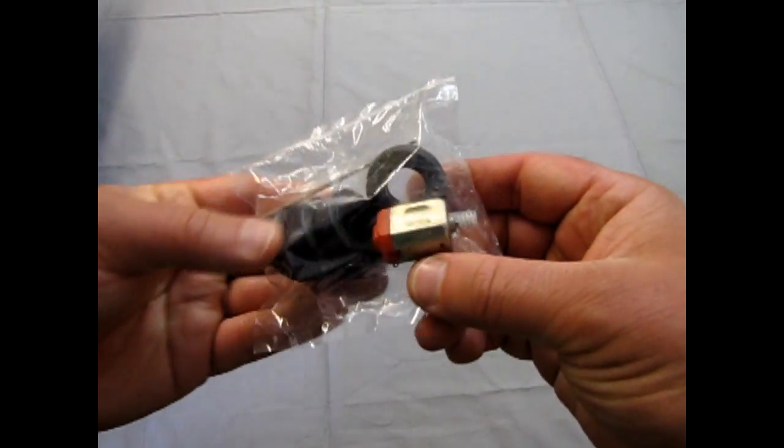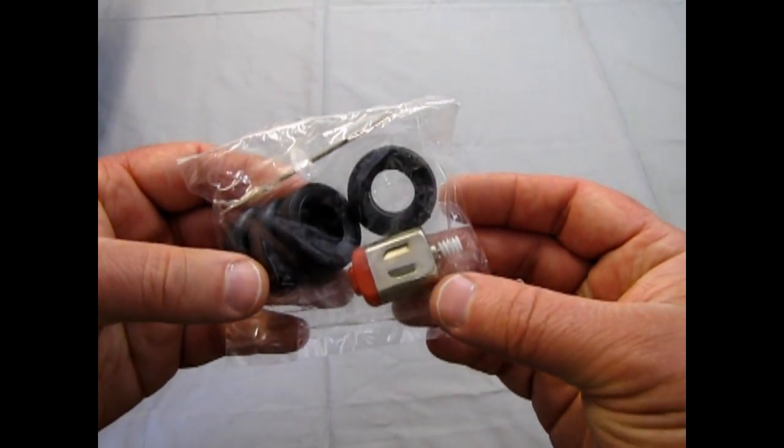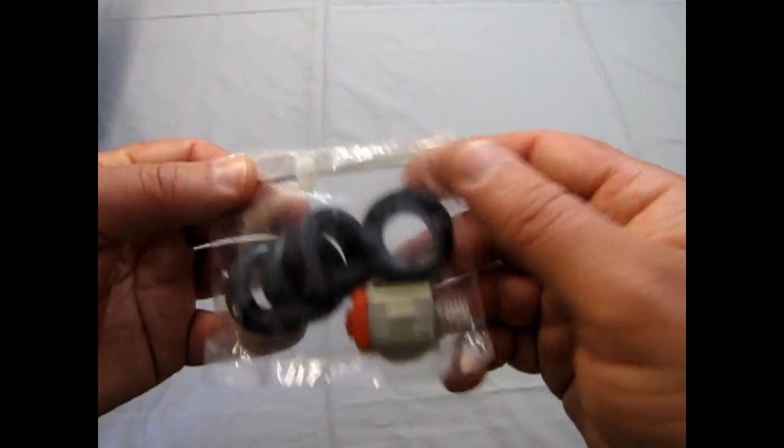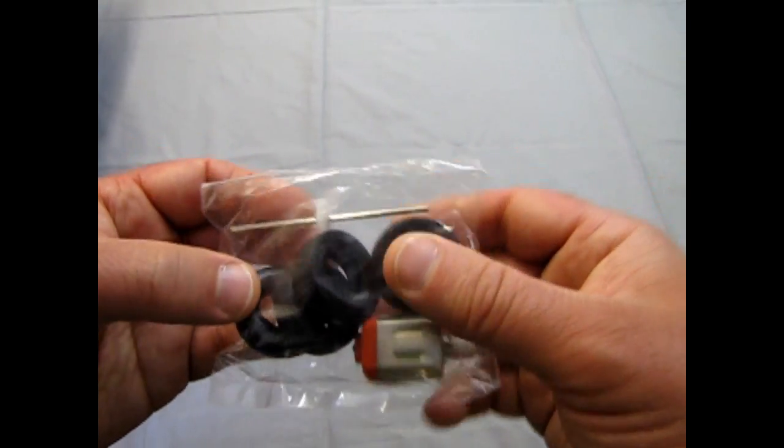And now we get into the mechanical portion or the electronic portion of this. You get some pretty nice solid tires there. A little electric motor with the worm gear on it as well as a regular gear for a nice differential.